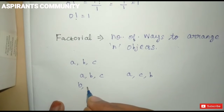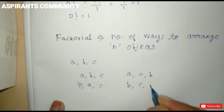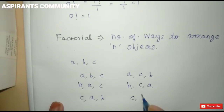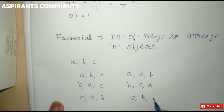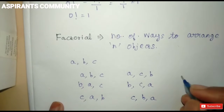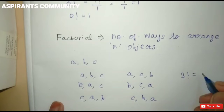B A C is a possibility. B C A is a possibility. C A B is a possibility. C B A is a possibility. So there are 6 total arrangements, and 3 factorial equals 6.